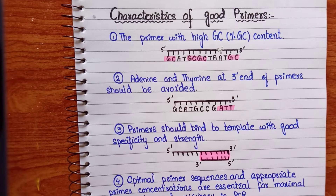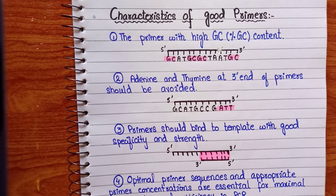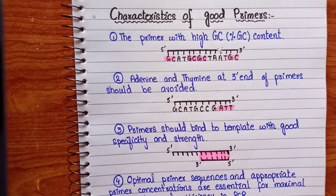Hello everyone and welcome back to my channel. In the previous lecture we briefly discussed all the basic components of PCR — DNA template, nucleotides, magnesium, DNA polymerase, and primers. In this video we will discuss the characteristics of good primers, which we can design in our laboratory.